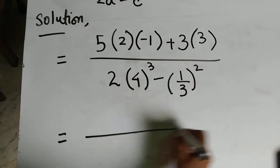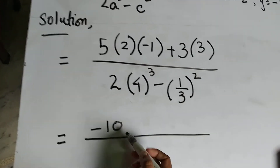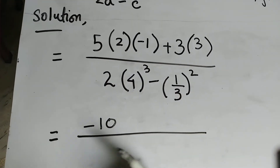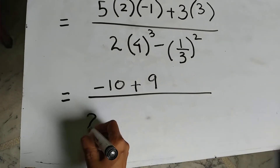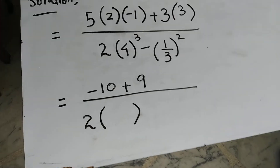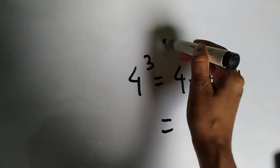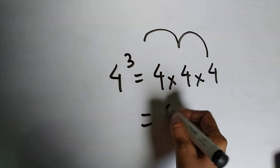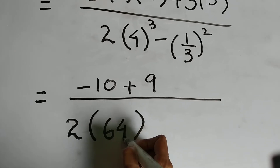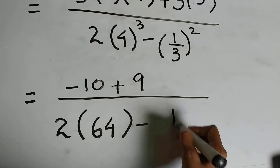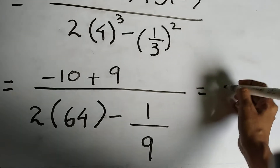Now solving: in the numerator, 5 times 2 is 10, times 1 is 10, giving minus 10 — wait, that's the value. Then plus 3 times 3 equals 9. In the denominator, 4 cubed means 4 times 4 is 16, times 4 is 64. And (1/3) squared means 1 over 9. So the expression becomes: minus 10 plus 9 in the numerator gives minus 1, over 2 times 64 minus 1/9, which is 128 minus 1/9.